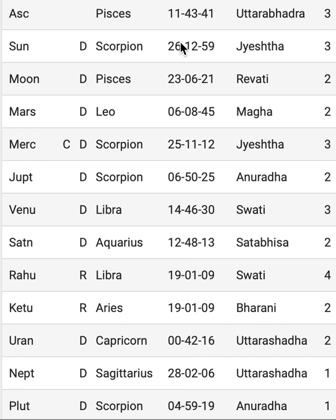Once we know the flavor of these three planets — Sun, Mercury, and Saturn — through their nakshatras, we can look for other planets in nakshatras ruled by the same nakshatra lord. For example, Shatabhisha is ruled by Rahu. The other nakshatras ruled by Rahu are Ardra and Swati. Ardra is not present, but Swati is there.